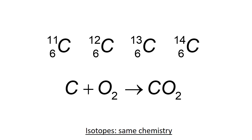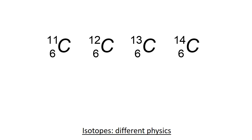So in this example, all these carbon isotopes may react with oxygen to form carbon dioxide. However, the different isotopes will show different types of physics.